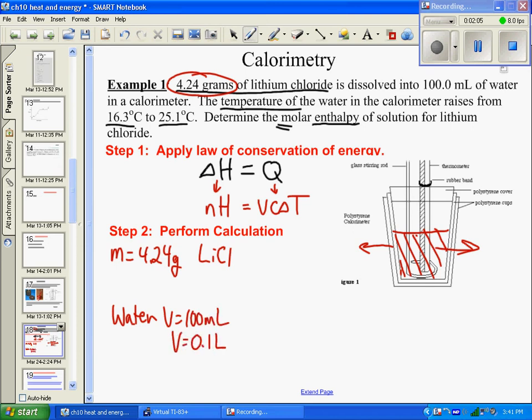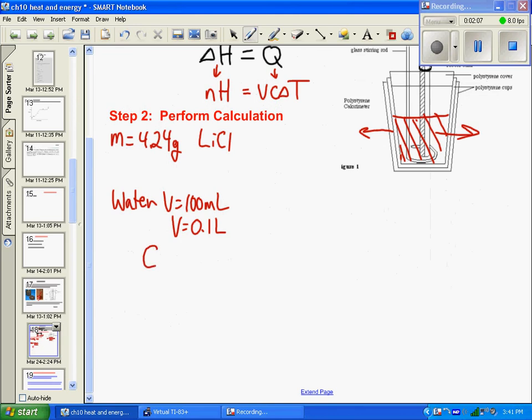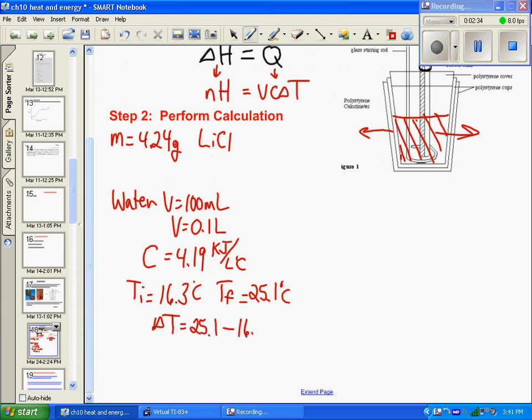The heat capacity of water, from the tables, is 4.19 kilojoules per liter degree Celsius. The water's temperature changes from 16.3°C to 25.1°C. So ΔT is 25.1 minus 16.3, which is 8.8 degrees Celsius.